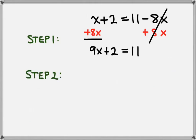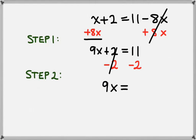The second step is to get the x term by itself, so we want to subtract 2 from the left hand side, and we need to do it to the right hand side as well. The 2 and the minus 2 cancel, which leaves us with the 9x on the left hand side. And then we have 11 minus 2, which is 9 on the right hand side.